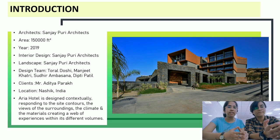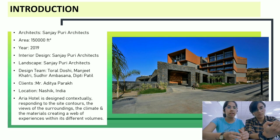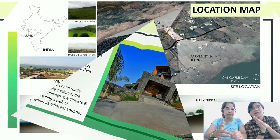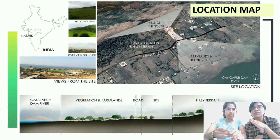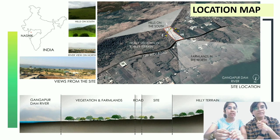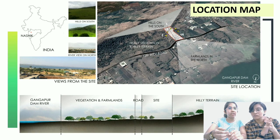It is designed very contextually, responding to the site contours, the view of the surroundings, the climate and the materials. They create a web of experiences within different spaces. This project is in the hilly terrains of Nashik and is designed along the contours. We have a hilly terrain on the south and a river front in the north.